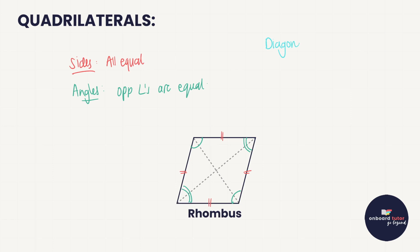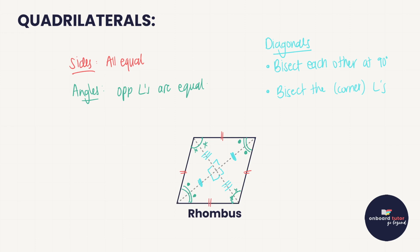We get loads of information from the diagonals of a rhombus. The diagonals are not equal in length, but they do bisect each other at 90 degrees — so all four angles in the middle are 90 degrees, and each half is bisected equally. The diagonals also bisect the angles of the vertices, so the diagonal splits each corner angle into two equal halves. And we mustn't forget: the opposite sides of a rhombus are also parallel.